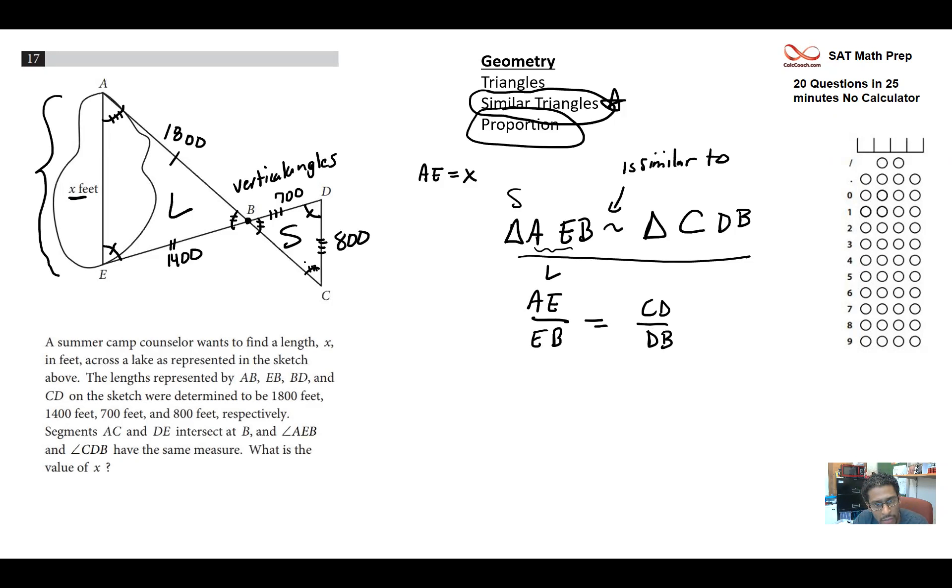We don't have what BC is, do we? No, we don't. So this works out well. So the guy that we're looking for, x, and EB is x is to 1,400 as CD, 800 is to 700.